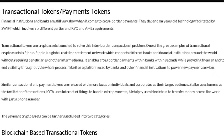Transactional tokens — financial institutions and banks are still very slow when it comes to cross-border payments. As we know, it takes three to seven days to get money to Coinbase, or wherever you're from. It takes me two to three days to get my money from my bank account to my trading account.